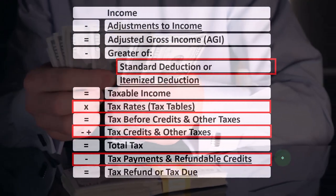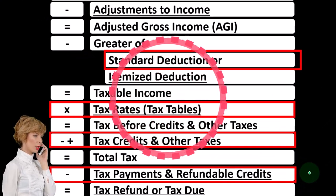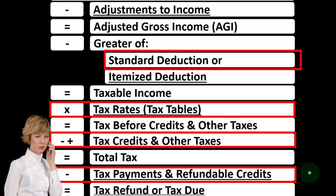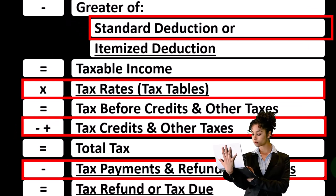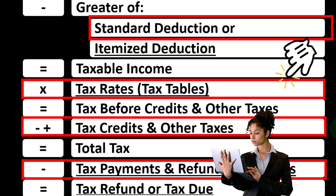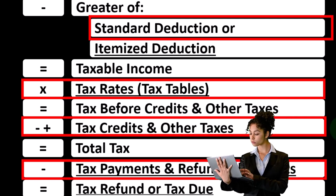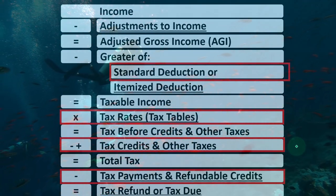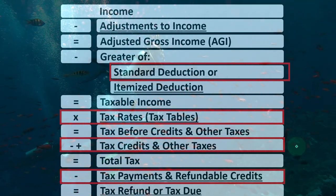If the credit is refundable, it can take the tax liability below zero — you basically get a benefit, kind of a refund, though it's more of a benefit program. If it's non-refundable, it can't take your tax liability below zero, so the benefit of the credit stops at that point. We'll dive into those items more deeply when we get into the calculations of the credits themselves, including the child tax credit.